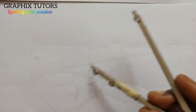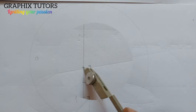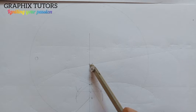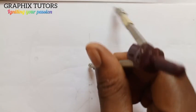I placed the compass on point 9, which corresponds to point A, and drew the full circle this way.